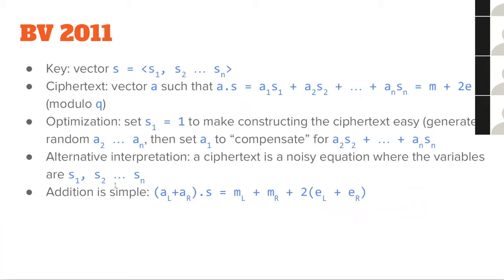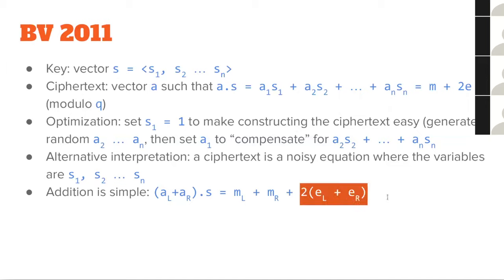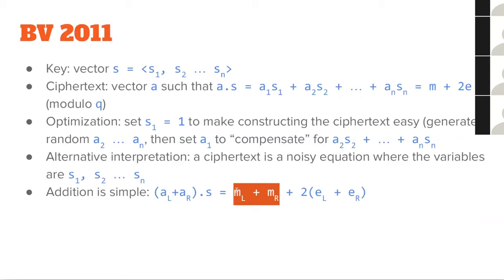Addition is easy. If AL · S = M1 + 2E1 and AR · S = M2 + 2E2, then since dot products are additive, (AL + AR) · S = (M1 + M2) + 2(E1 + E2). Decryption just computes A · S and takes the last bit. So decrypting the sum gives you the XOR of the two message bits, with even error that gets cancelled out. Addition in this scheme is simple.